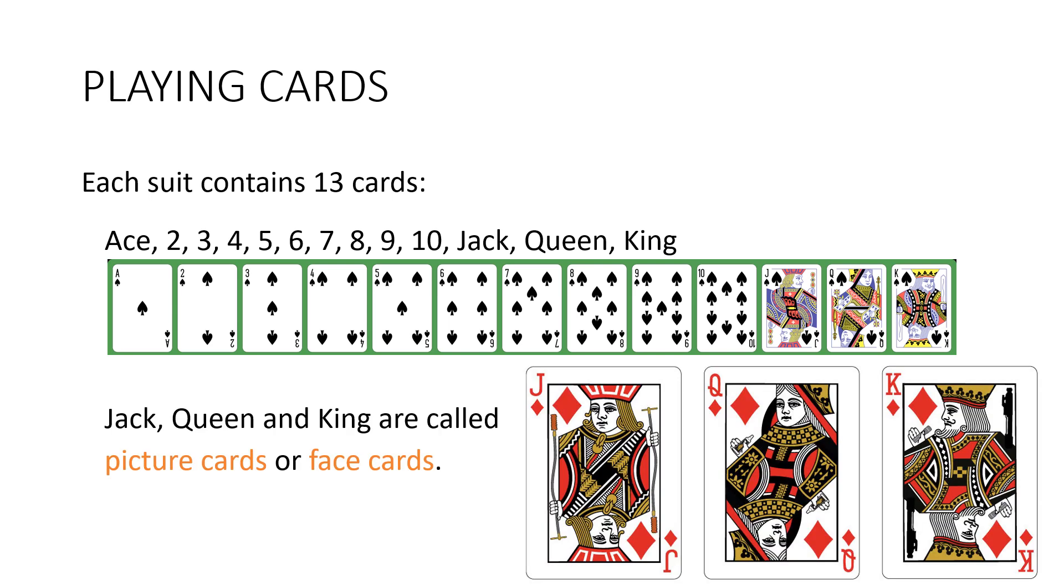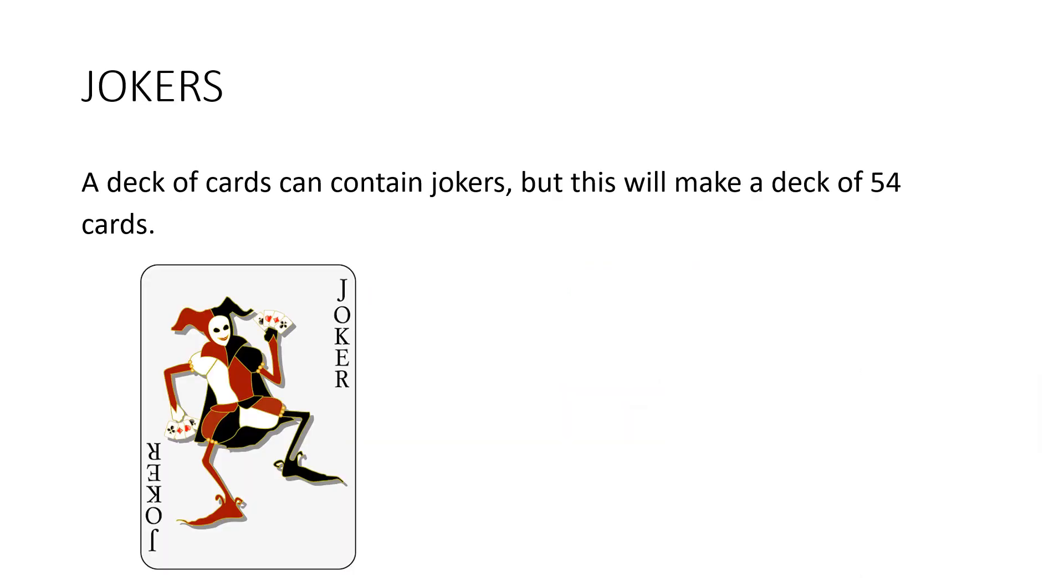And the jack, queen and king are called picture cards or face cards. Now a deck of cards can contain jokers but this will make a total of 54 cards. So normally in our questions we say a standard deck of 52 cards so you can ignore the jokers.